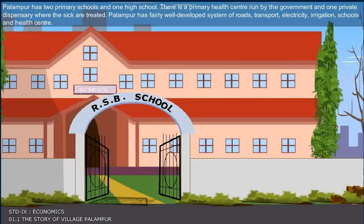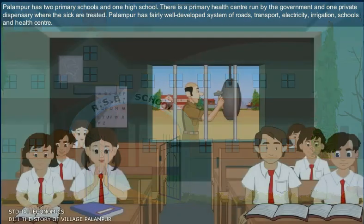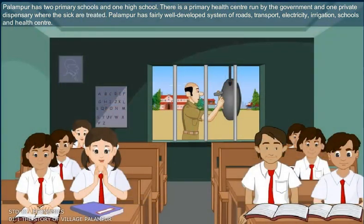Palampur has two primary schools and one high school. There is a primary health centre run by the government and one private dispensary where the sick are treated. Palampur has a fairly well-developed system of roads, transport, electricity, irrigation, schools and health centre.